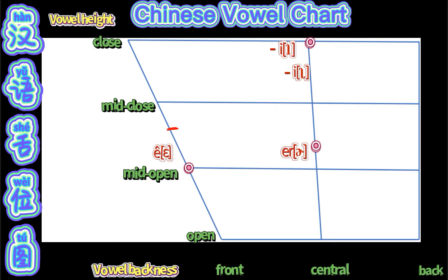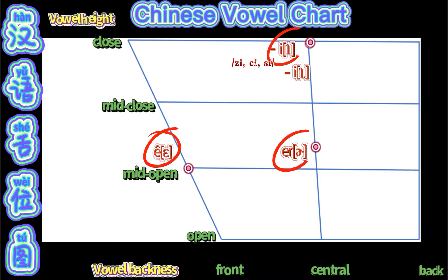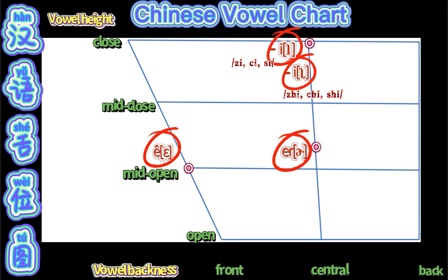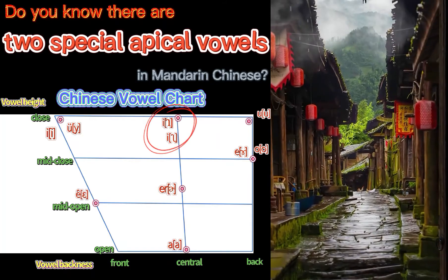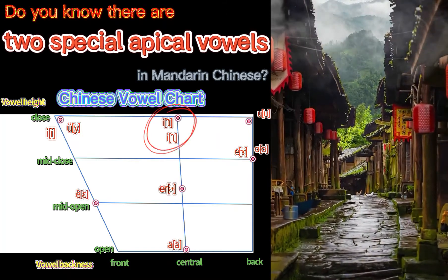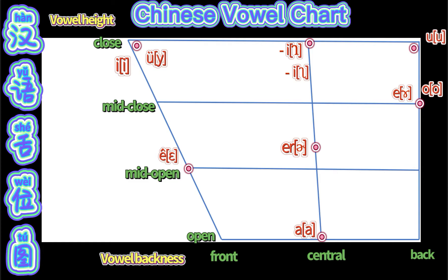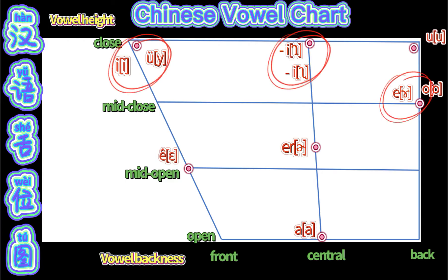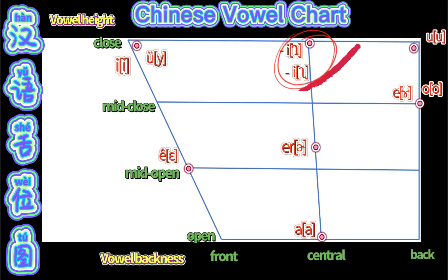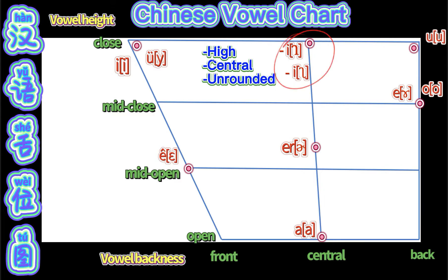We will examine additional phonetic symbols and their points of articulation. What's the difference? For two high central and rounded vowels, we should know that there are two unusual vowels in Mandarin Chinese.